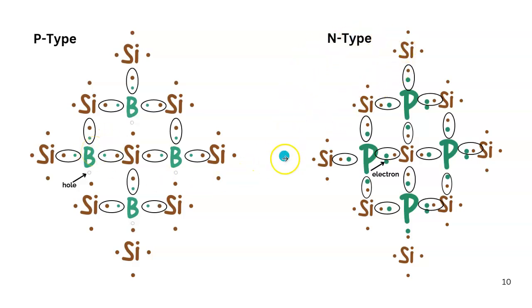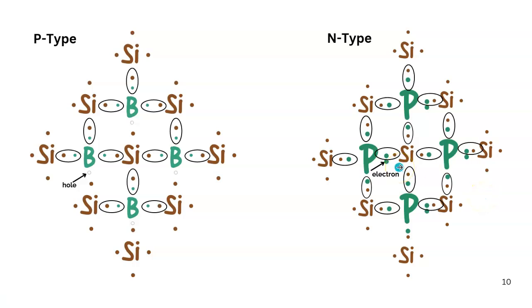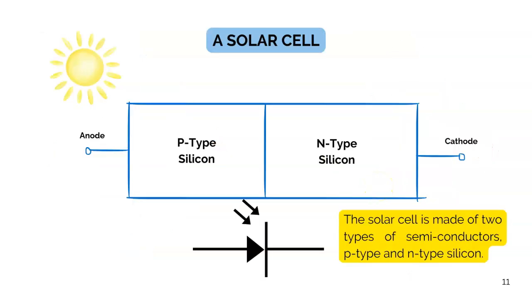In N-type semiconductors, in which pentavalent impurity is added to pure silicon, we have electrons as majority carriers and holes as minority carriers. When P-type silicon and N-type silicon are joined together, we get a solar cell.